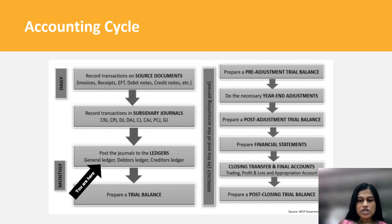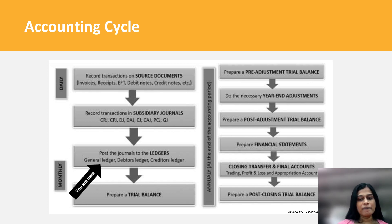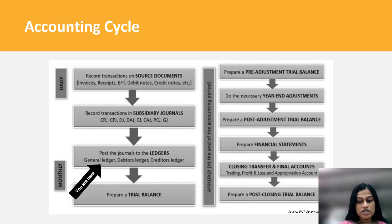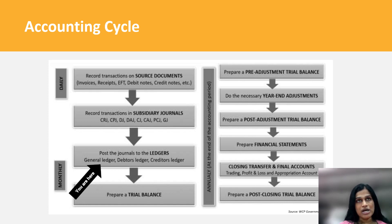On an annual basis, you'll prepare your pre-adjustment trial balance, do some necessary year-end adjustments, and then prepare a post-adjustment trial balance, which will then be used to prepare your financial statements — including your income statement, cash flow statement, and balance sheet. You will also close and transfer to final accounts like your trading, profit and loss, and appropriation account, and prepare a post-closing trial balance.